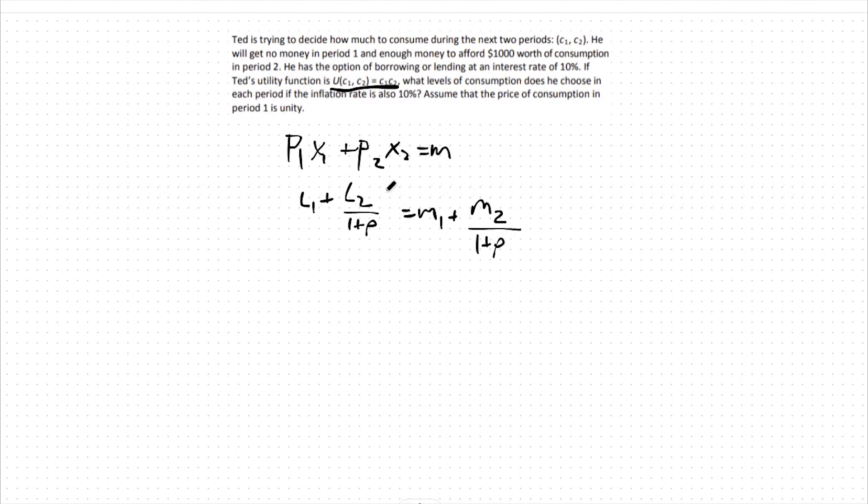Consumption in period 1 and consumption in period 2 are both composite goods, meaning we take all the consumption of different goods in period 1 and analyze it as one variable. If I buy apples, oranges, bananas, mangoes, all of those we're saying is one variable now, and that's for both states of the world.